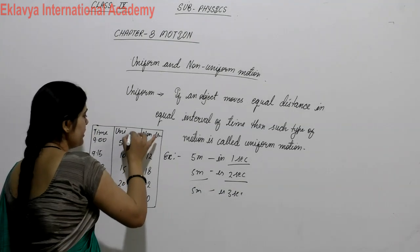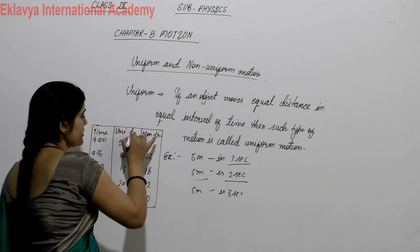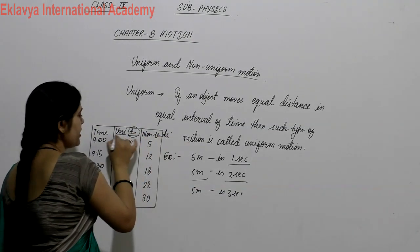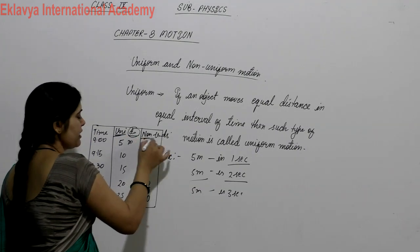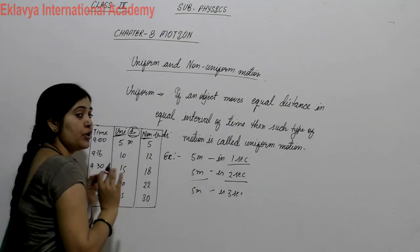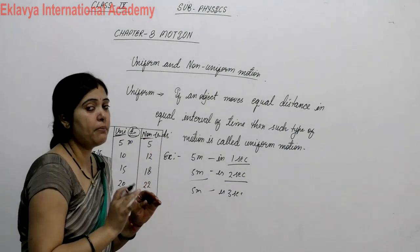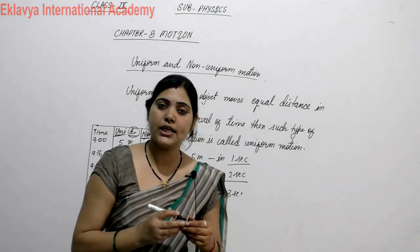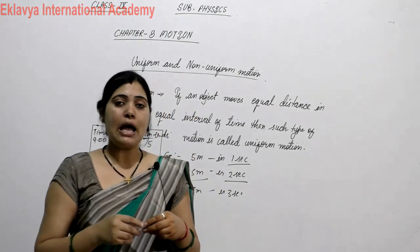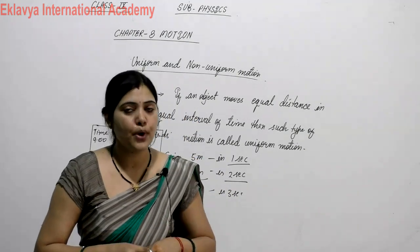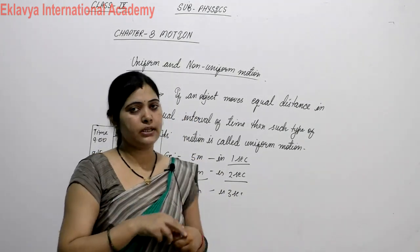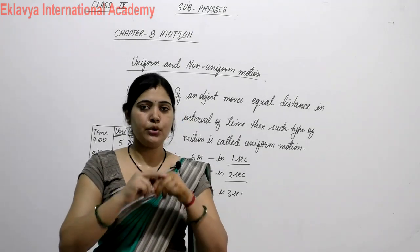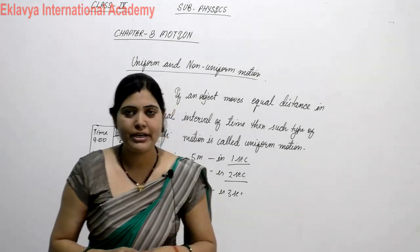So we can see: one column shows distance in uniform motion, and the other shows distance in non-uniform motion. Such types of motions are called uniform and non-uniform motions. That's all for today. Thank you and have a nice day.